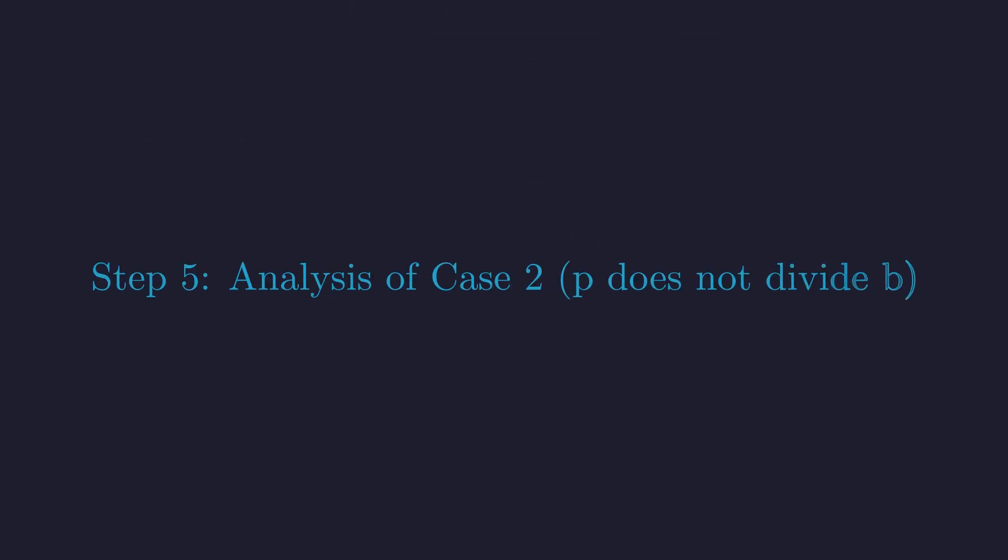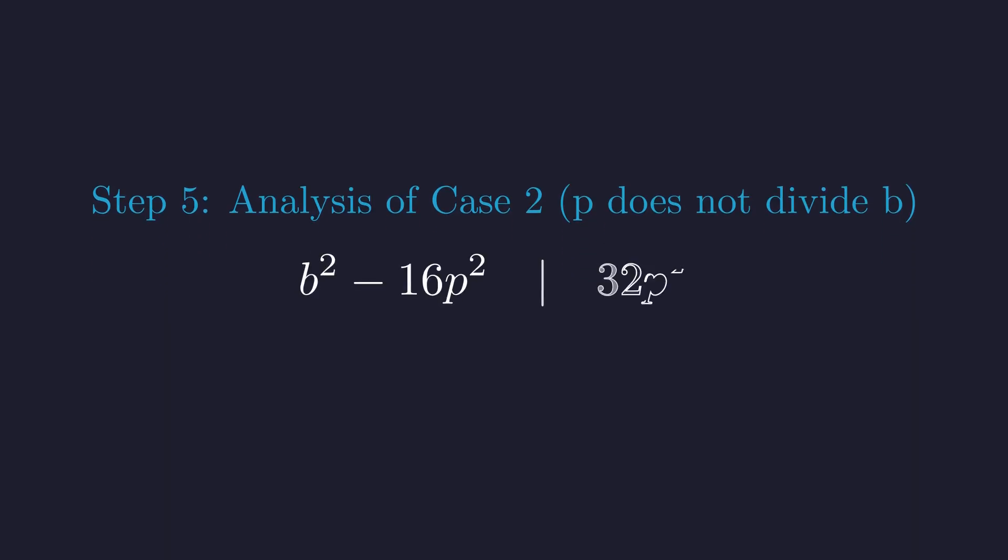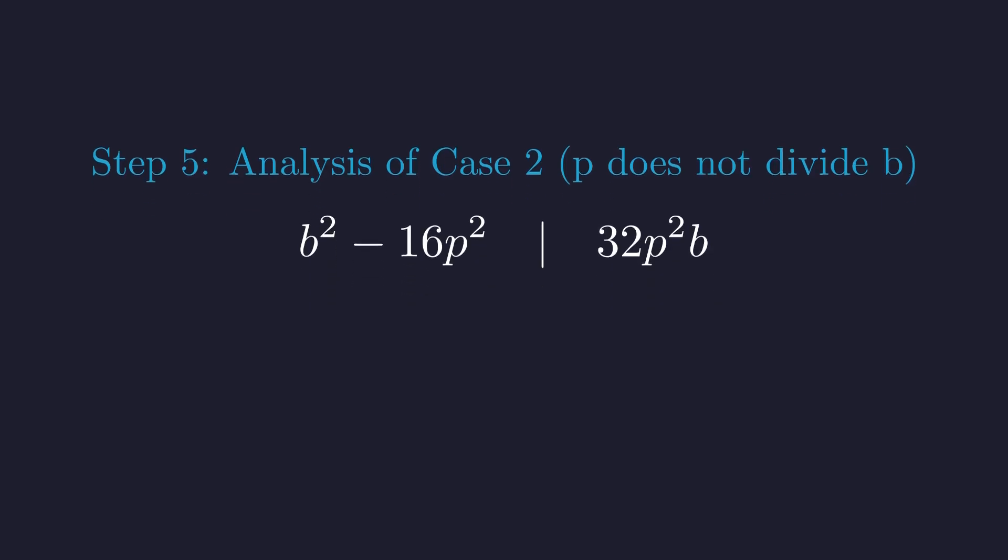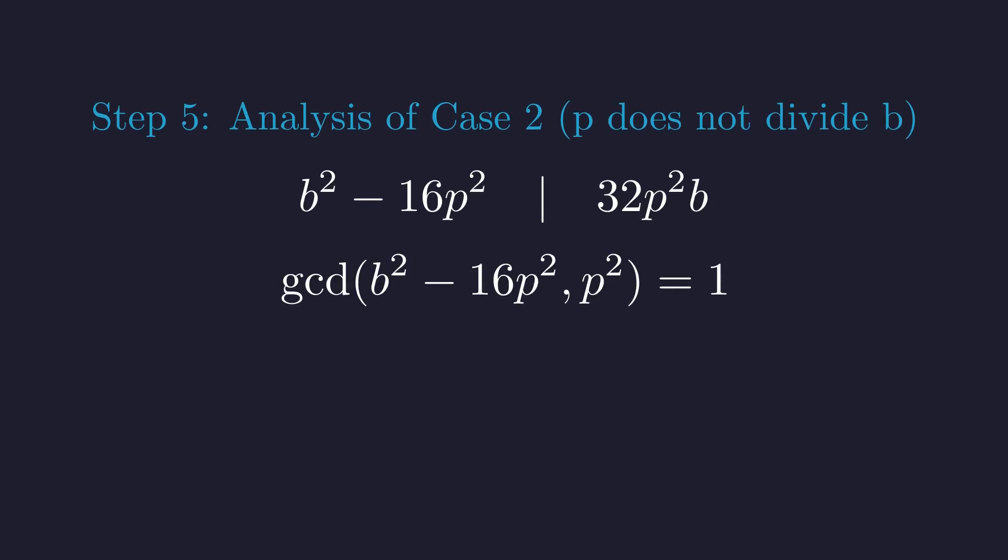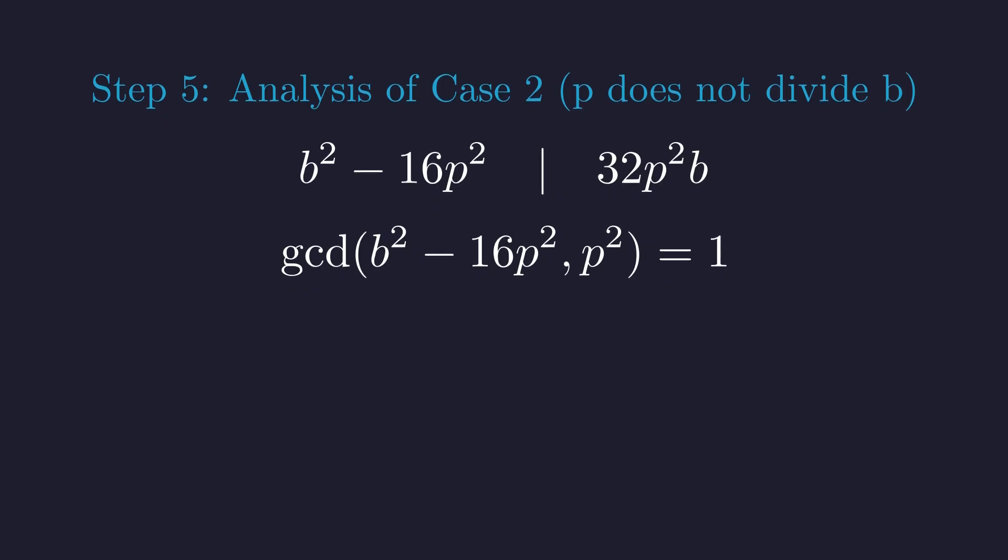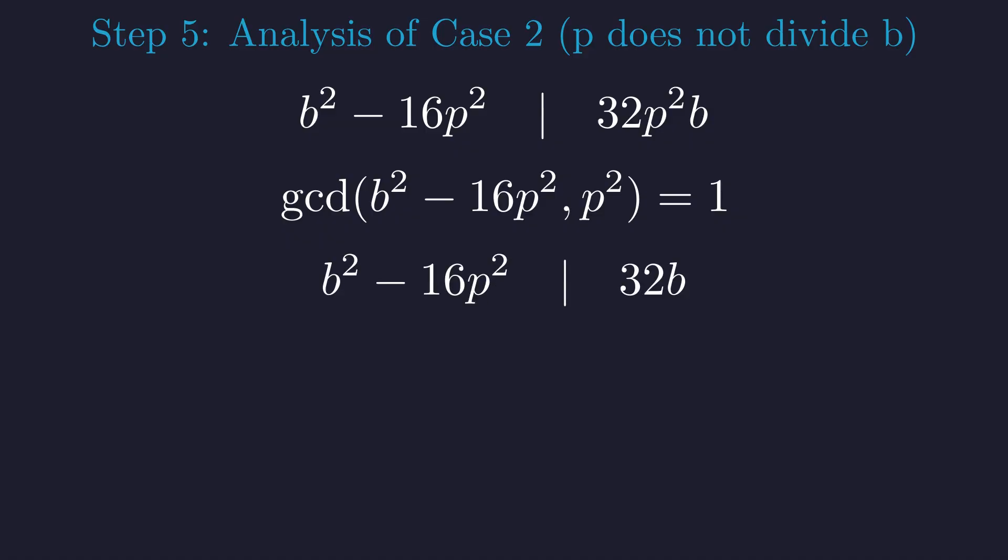For completeness, we need to rule out case 2 entirely. Back to our divisibility condition but now assuming p doesn't divide b. If p doesn't divide b, then b squared minus 16p squared must be co-prime to p squared. They can't share any factors involving p. So by Euclid's lemma, it has to divide what's left, 32b.